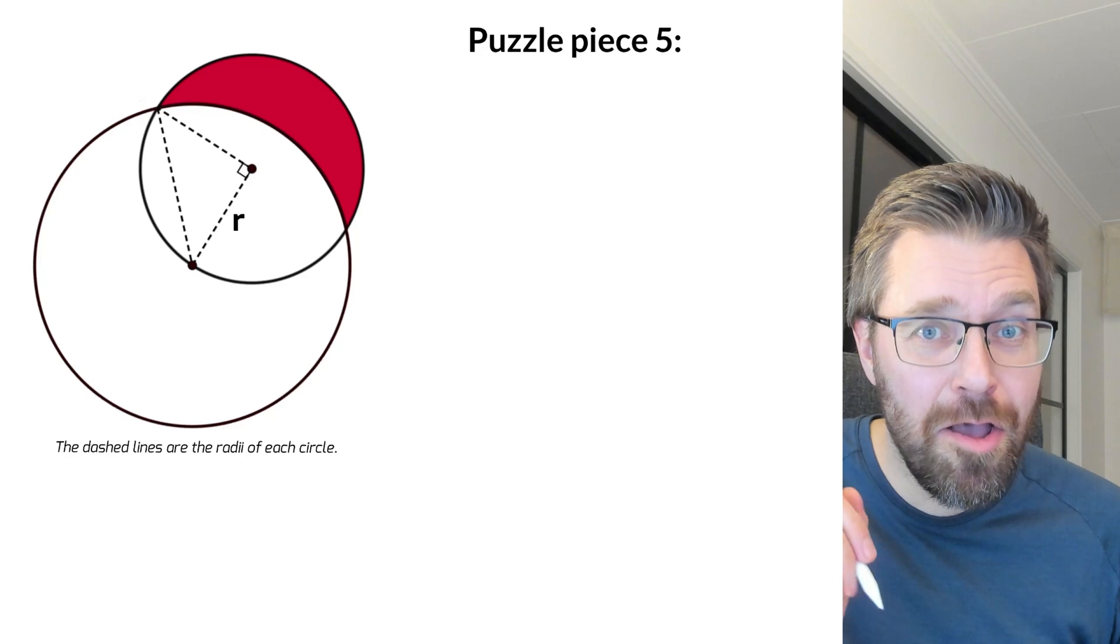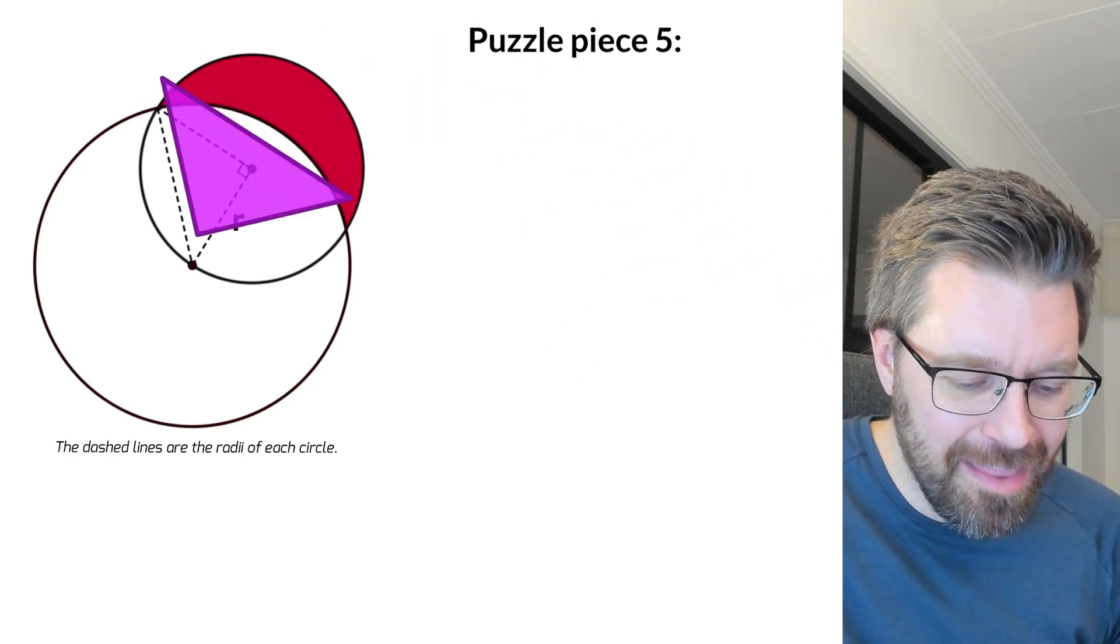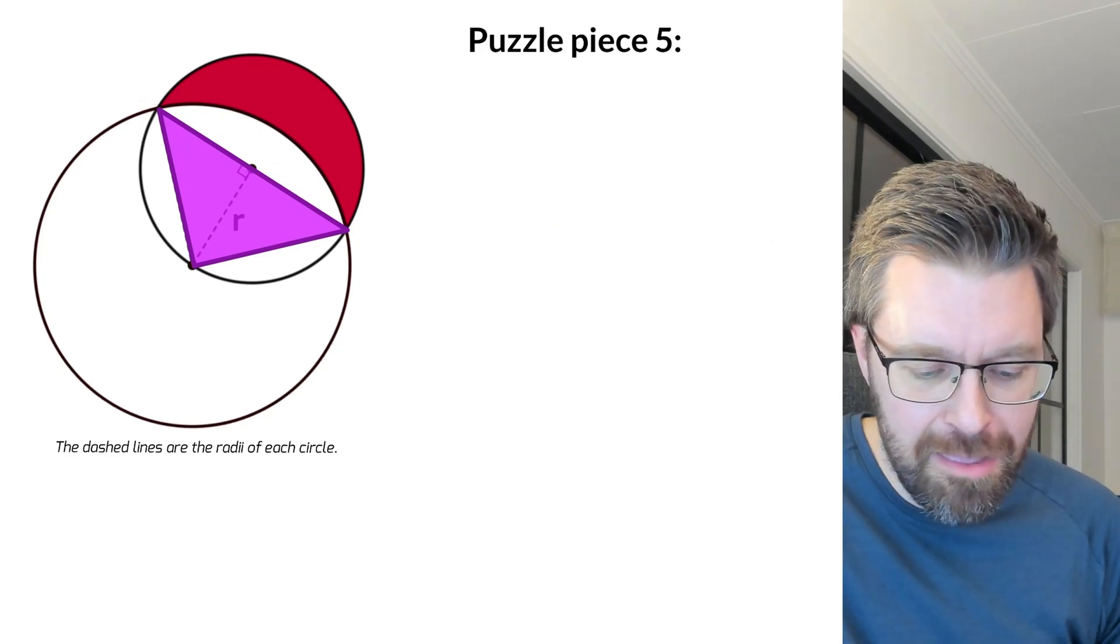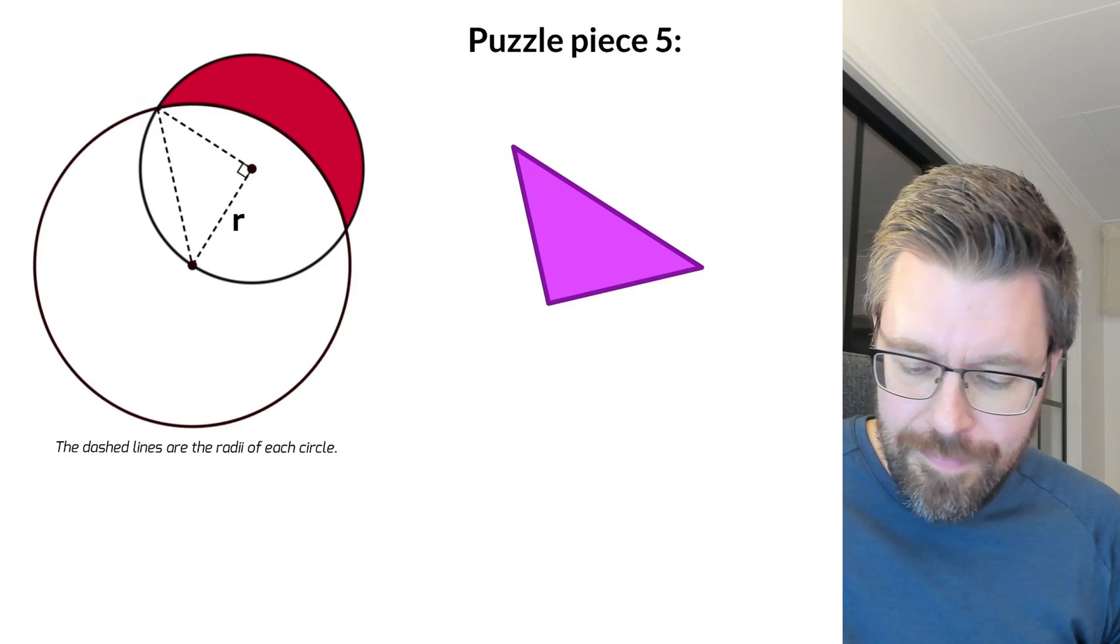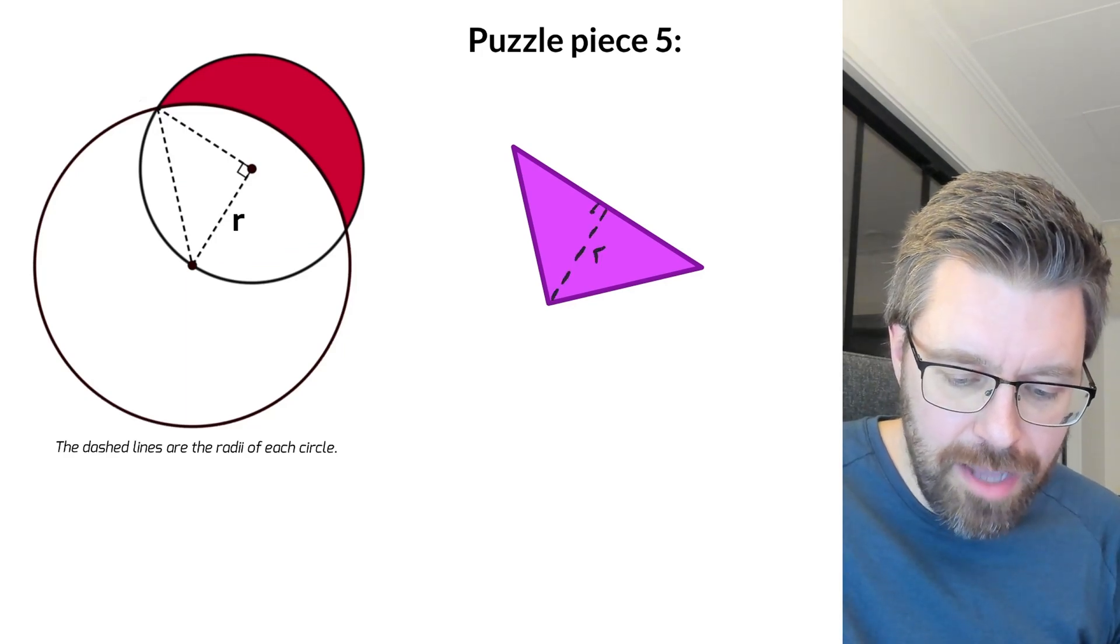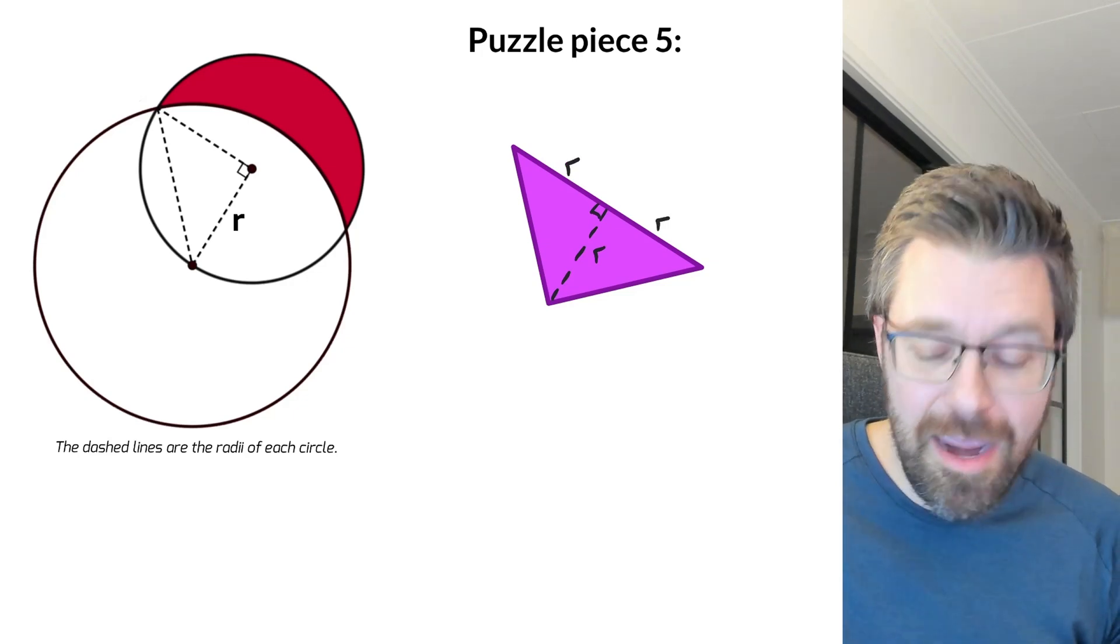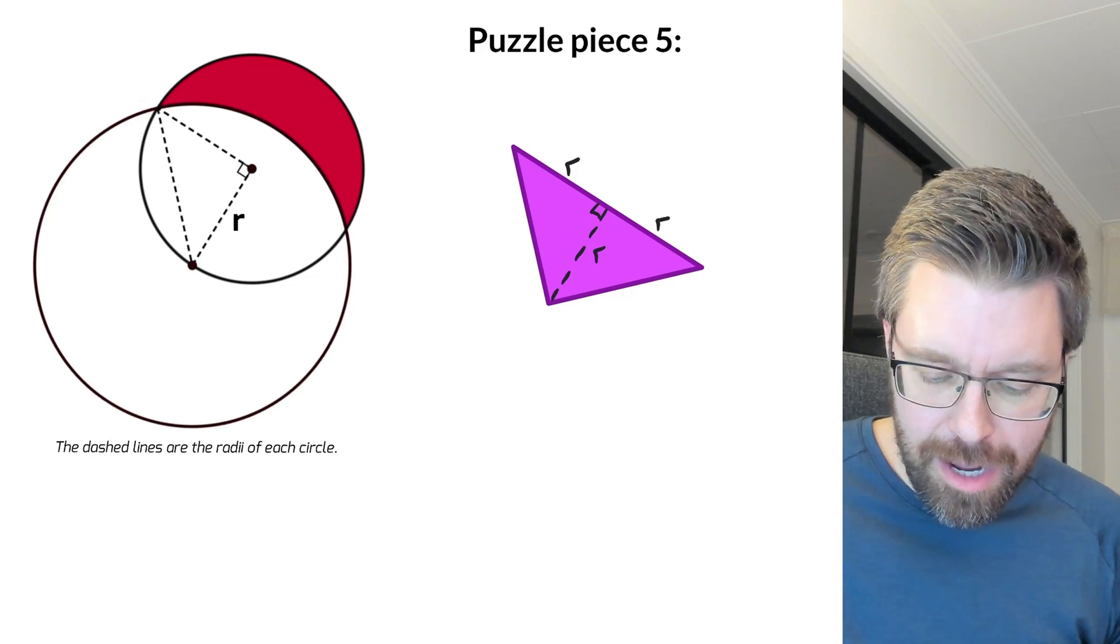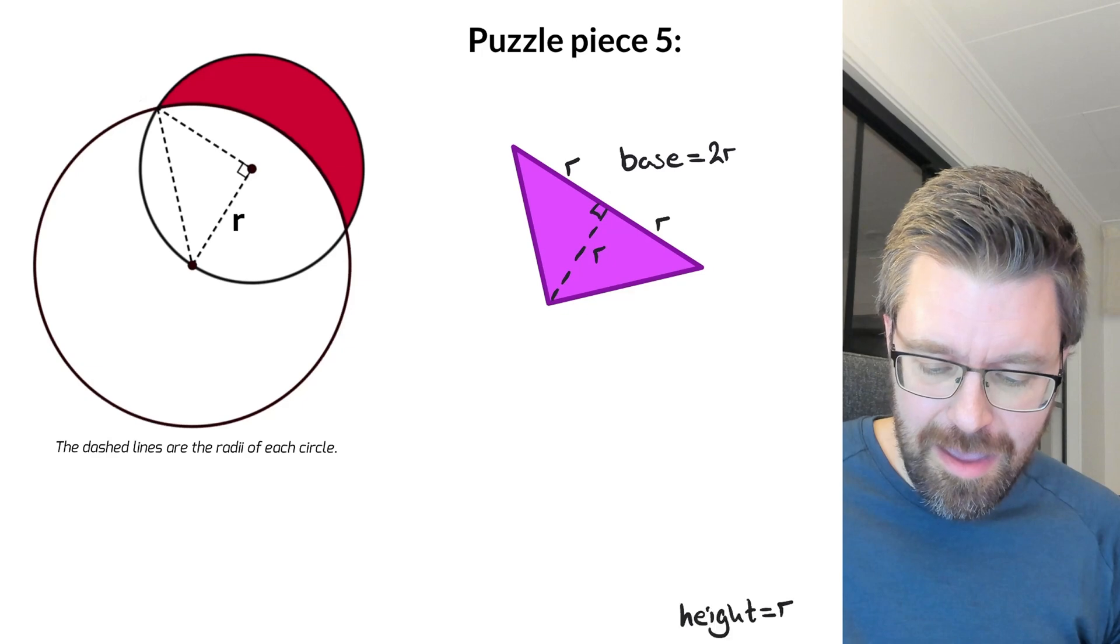And here comes the last puzzle piece. It is this nice little piece and it's a right triangle. We have already discussed the right angle here. And we know that this triangle has the length here of little r, a right angle here and little r here and little r here. So if this is our base in the triangle, then the base is two r and the height here is r.